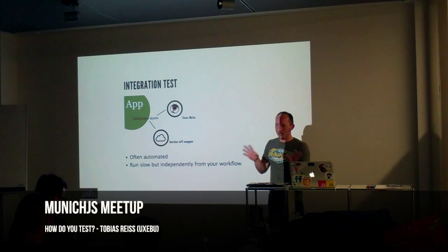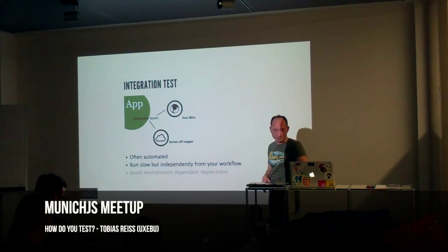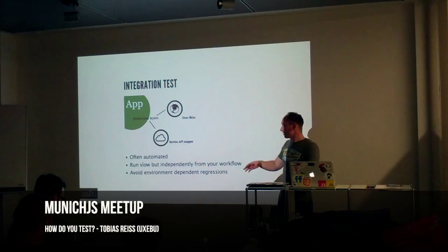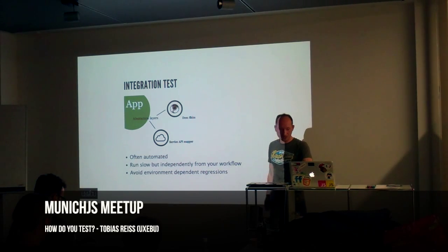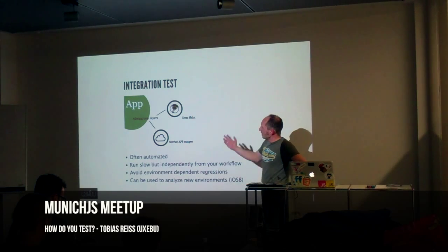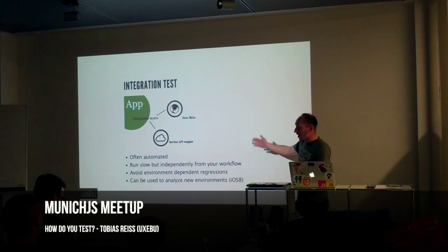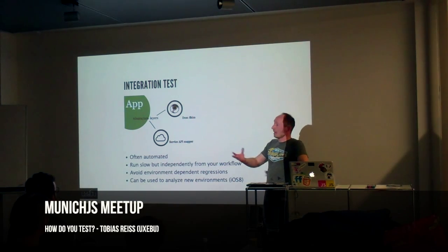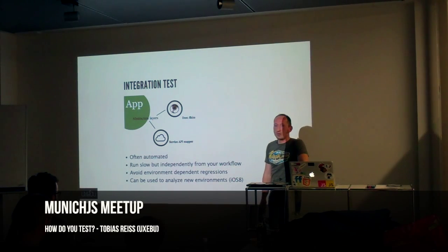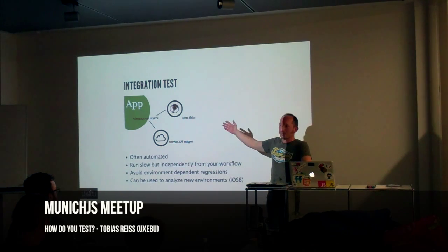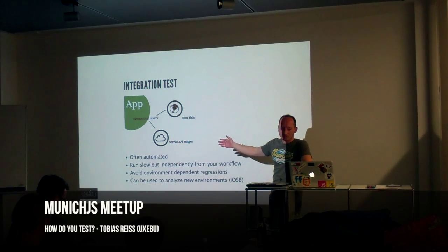That way you can avoid environment-dependent regressions. If you have a problem in just one environment, you write a test for that particular environment — just for the abstraction layer, not for the whole application. And if there's a new environment, like a new iOS version you want to support, you just run those integration tests on that new device and you can make sure everything is going to work.